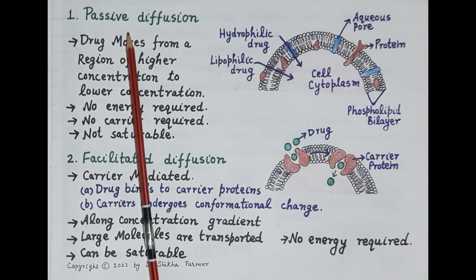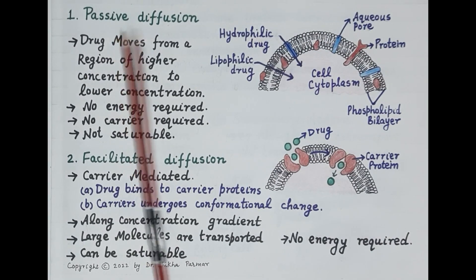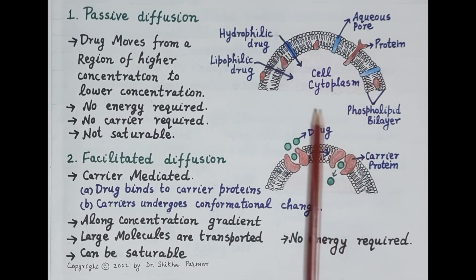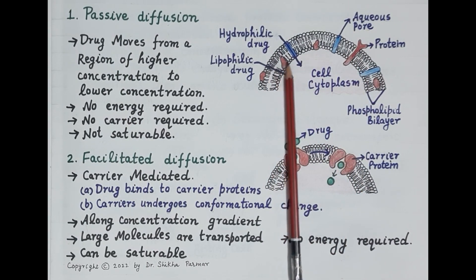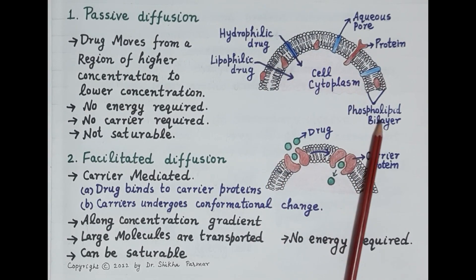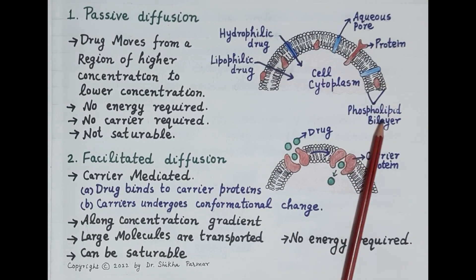Let's first talk about passive diffusion. It is termed as passive because the transportation of drug across the cell membrane does not require energy. Looking at this diagram, this is the cell membrane — a bilayer membrane made up of phospholipid molecules, termed as a phospholipid bilayer.